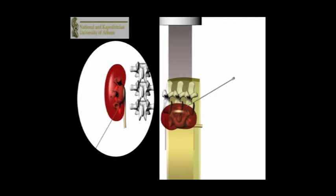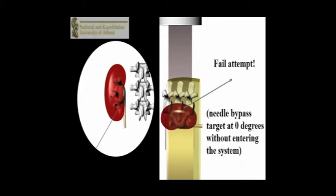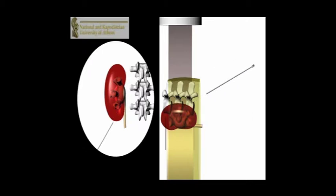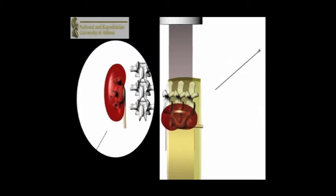The depth and the angle of the needle needed to reach the calyx is recognized by the surgeon's experience and is adopted by altering the inclination of the needle as it is advanced towards the kidney.